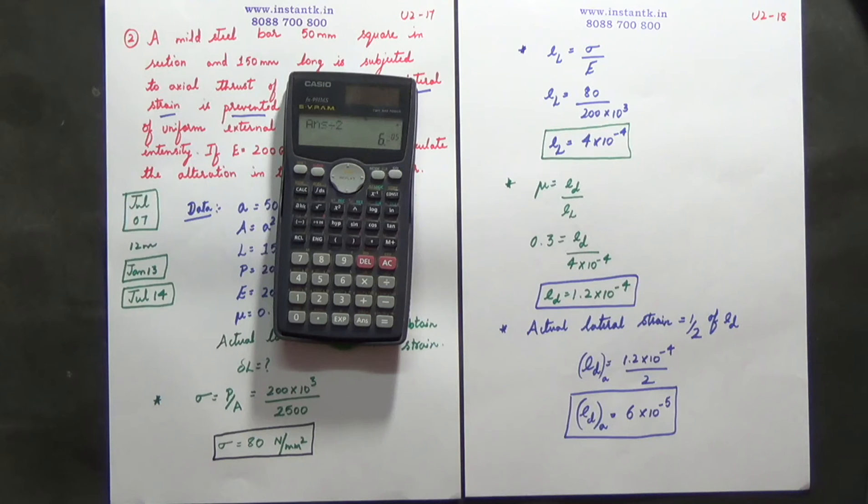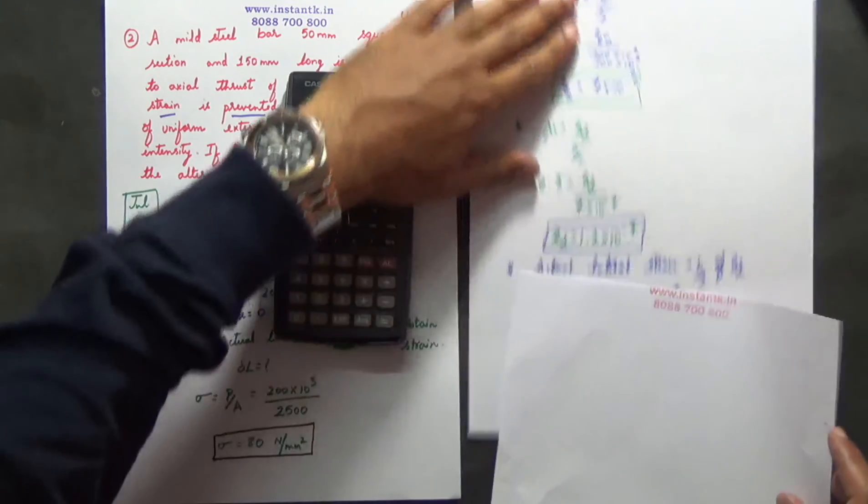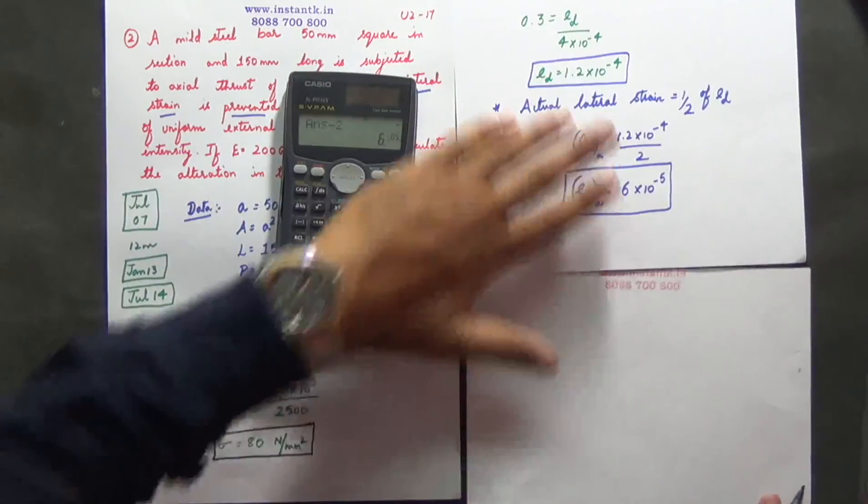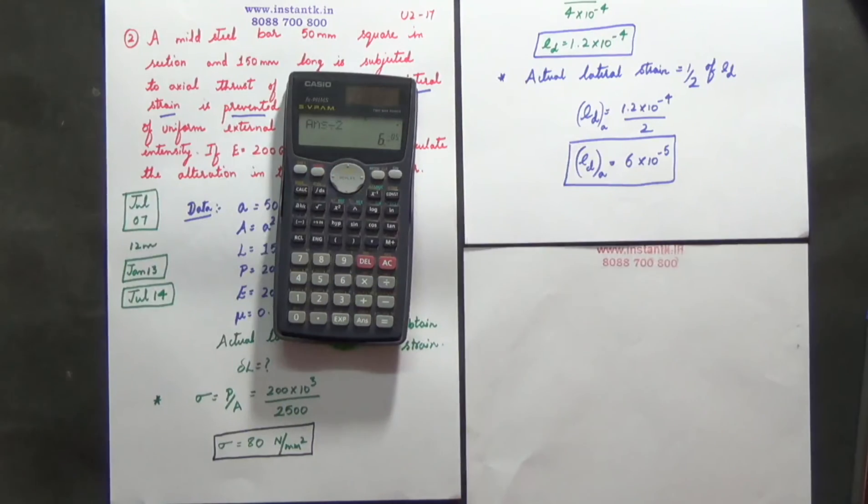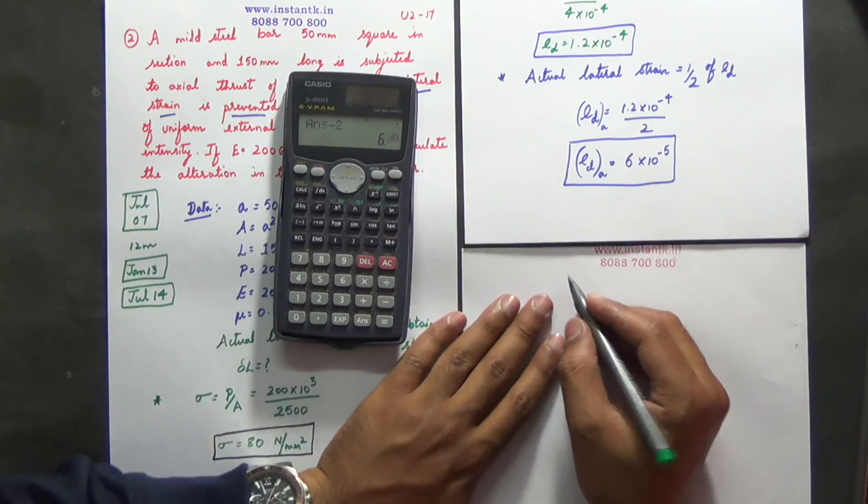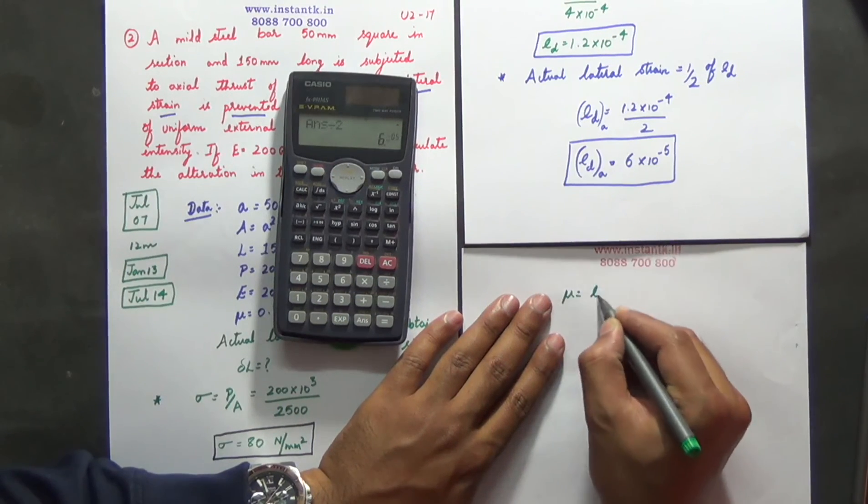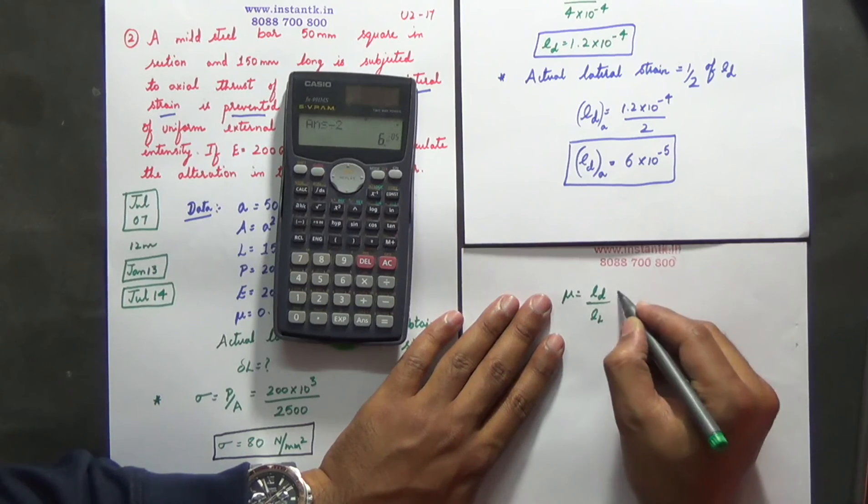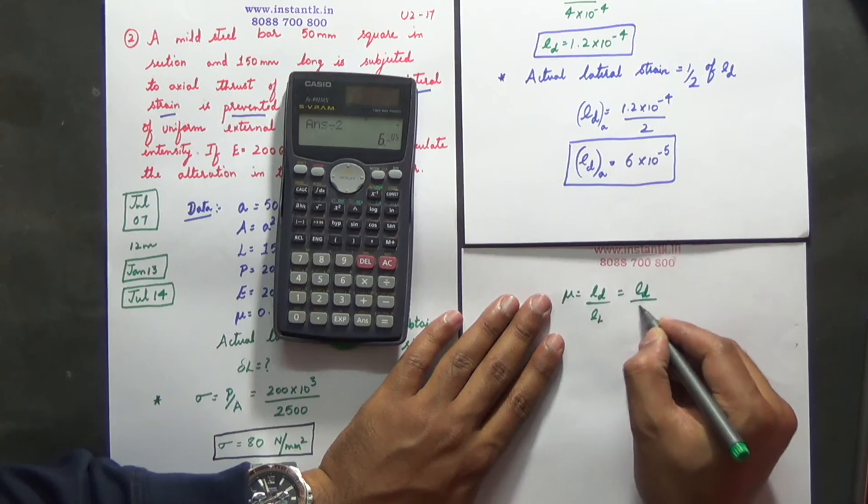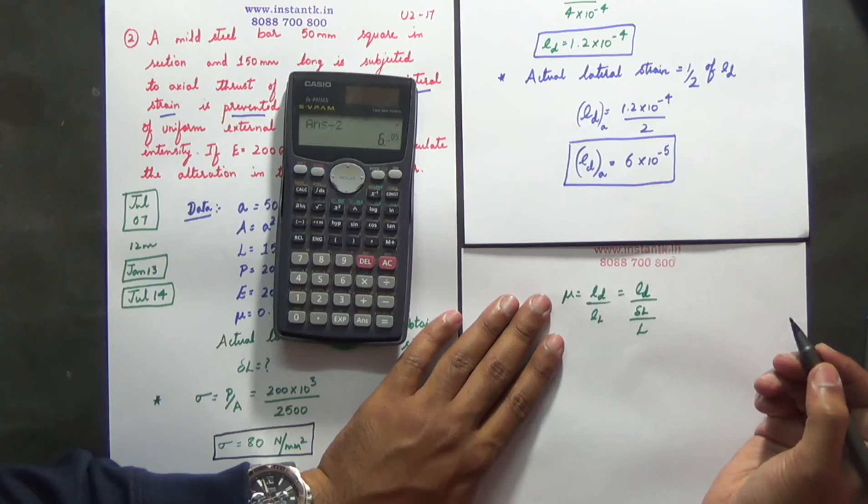Last step is to find delta L with this value. So next step is mu is equal to ed divided by el, which is nothing but ed divided by delta L by L.